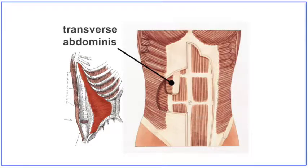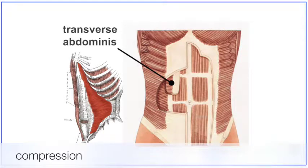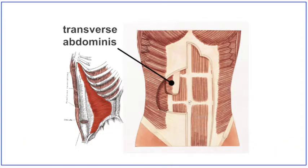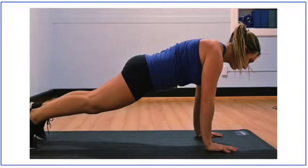Let's start with the transverse abdominus muscle. It's the deepest of the abdominals and wraps around the torso horizontally like a corset. Its joint action is compression of the abdomen, which is an isometric contraction that results in no movement of the spine. When fitness instructors cue 'draw your navel in towards your spine,' this is the muscle that is activated. The plank exercise is a good example of the transverse abdominus generating force to isometrically compress and stabilize the spine.